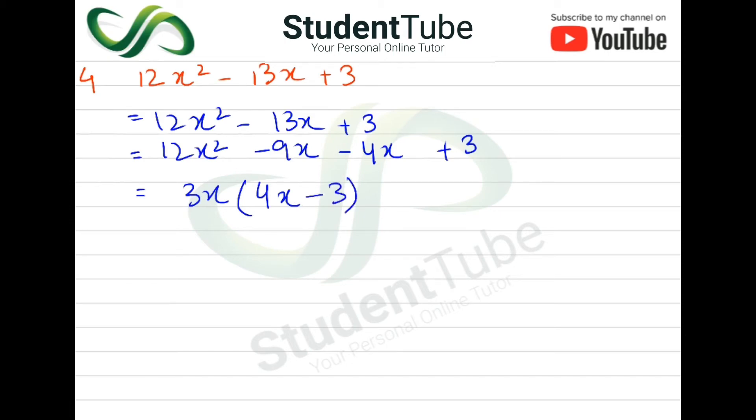Then we will take common here, minus 1. Minus 1 will come out, then 4x minus and 3 will come out.